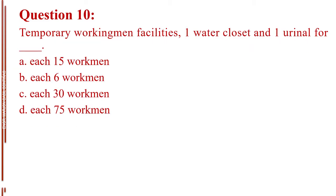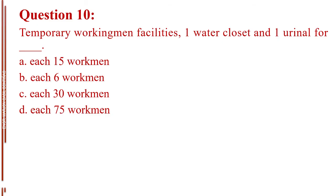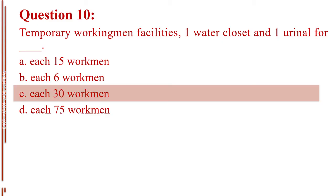Question number 10. Temporary workingman facilities — one water closet and one urinal for blank. Letter A, each 15 workmen. Letter B, each 6 workmen. Letter C, each 30 workmen. Letter D, each 75 workmen. The answer is Letter C, each 30 workmen.